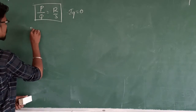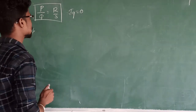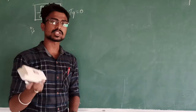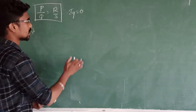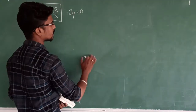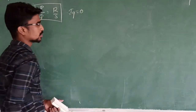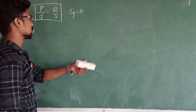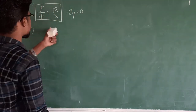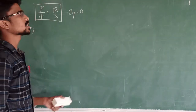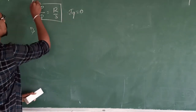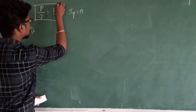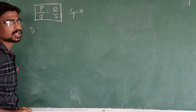The first application or first use of the Wheatstone bridge is that it is used to find the resistance of a wire. In any circuit where you do not know the resistance of the wire, using this equation or using the Wheatstone bridge, you can find out that unknown resistance value.